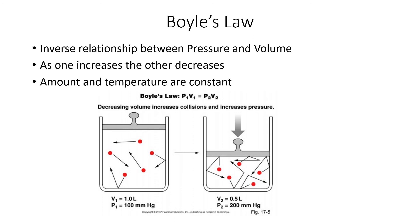What we want to do next is talk about a series of gas laws. Each gas law has a name and describes a relationship between two different properties. Remember, there are four total properties, so each law describes how two of the properties are related to each other. As you describe how two are related, the other two must be held constant. So we're going to discuss the relationship between two properties, and the other two properties will be held constant.